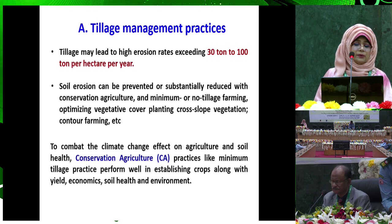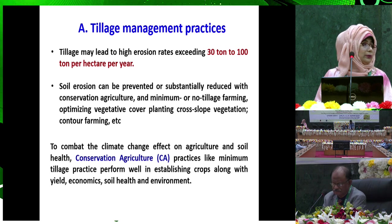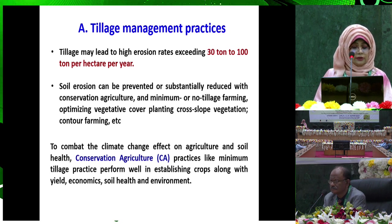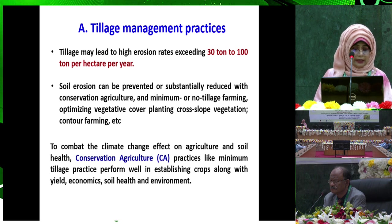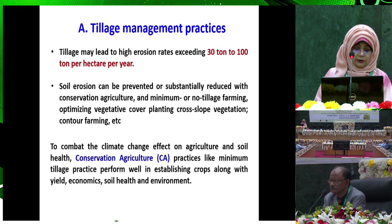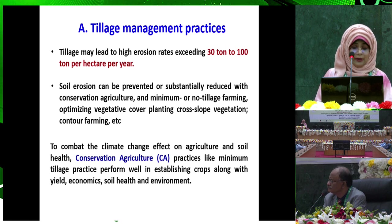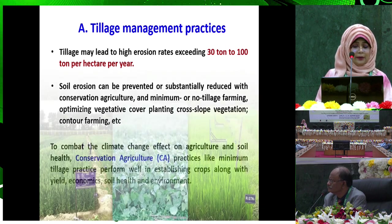Here we use the tillage management practice. We know that tillage may lead to high aeration rates exceeding 30 to 100 tons per hectare per year. Soil aeration can be prevented or reduced with conservation agriculture and minimum tillage. To combat the climate change effect on agriculture and soil health, conservation agriculture practice like minimum tillage performs well for soil health and environment.